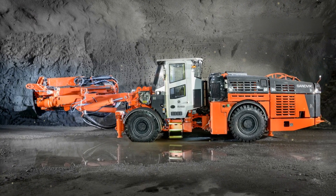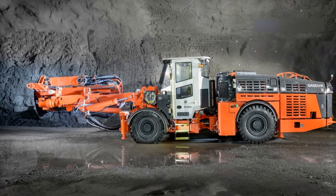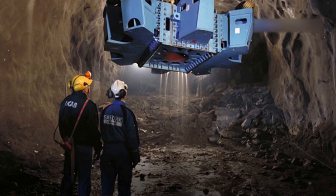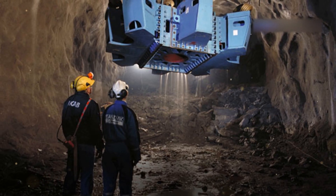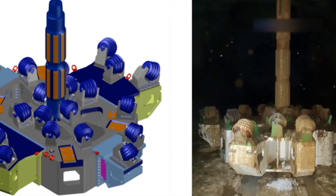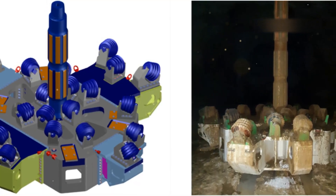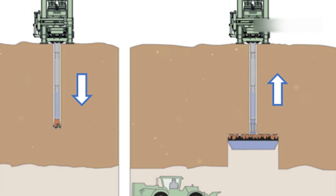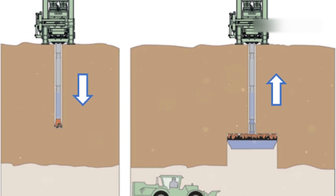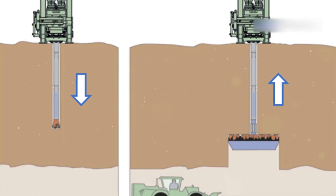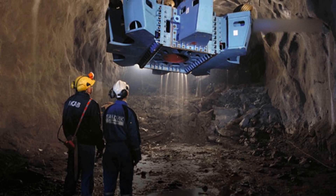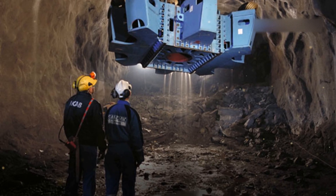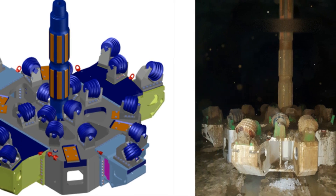Imagine creating a vertical shaft connecting different levels of an underground mine. Enter the raised boring machine, drilling upwards from the bottom. These machines create ventilation shafts and other critical infrastructure. Often used with tunnel boring machines, they form interconnected tunnels and shafts. The drill bit starts at the bottom and works upwards. Raised boring is safer, reducing the risk of accidents — it's quieter and produces less vibration than traditional methods.